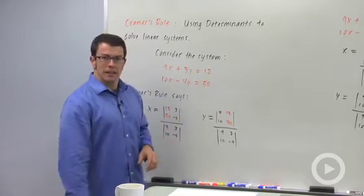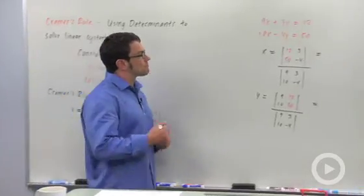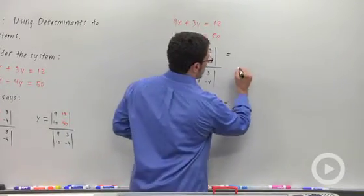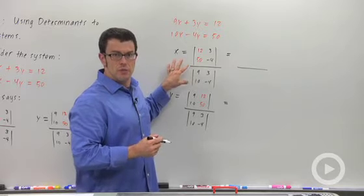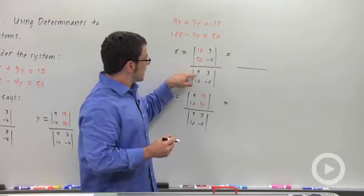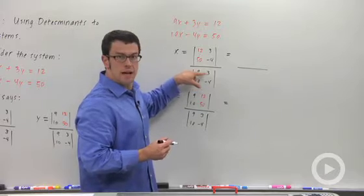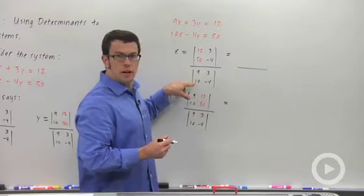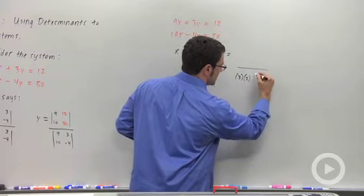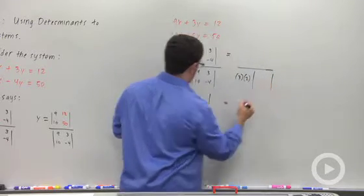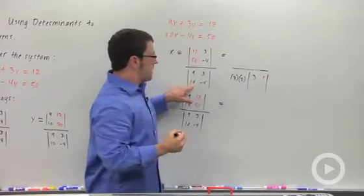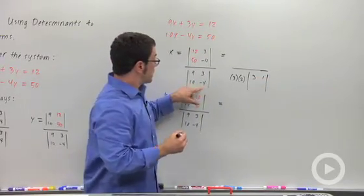Let's actually calculate these and see what the solution is. So I want to do x first. Now let's observe that you can still use the simplification rules for determinants whenever possible. Like in the denominator, I can pull a 3 out of this top row and a 2 out of the bottom row, and that gives me 3 times 2 times the determinant. 3, 1 - I pulled a 3 out of the top, and I pulled a 2 out of the bottom, so I have 5, negative 2.